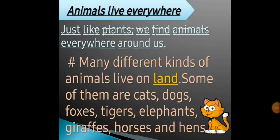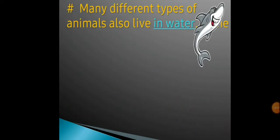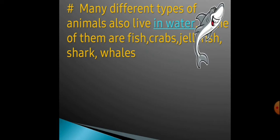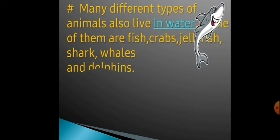Many different kinds of animals live on land. Some of them are cats, dogs, foxes, tigers, elephants, giraffes, horses and hens. Yeh jo sare animals hain, woh land mein, matlab zameen pe rehte hain. Many different types of animals also live in water. Some of them are fish, crabs, jellyfish, sharks, whales and dolphins.